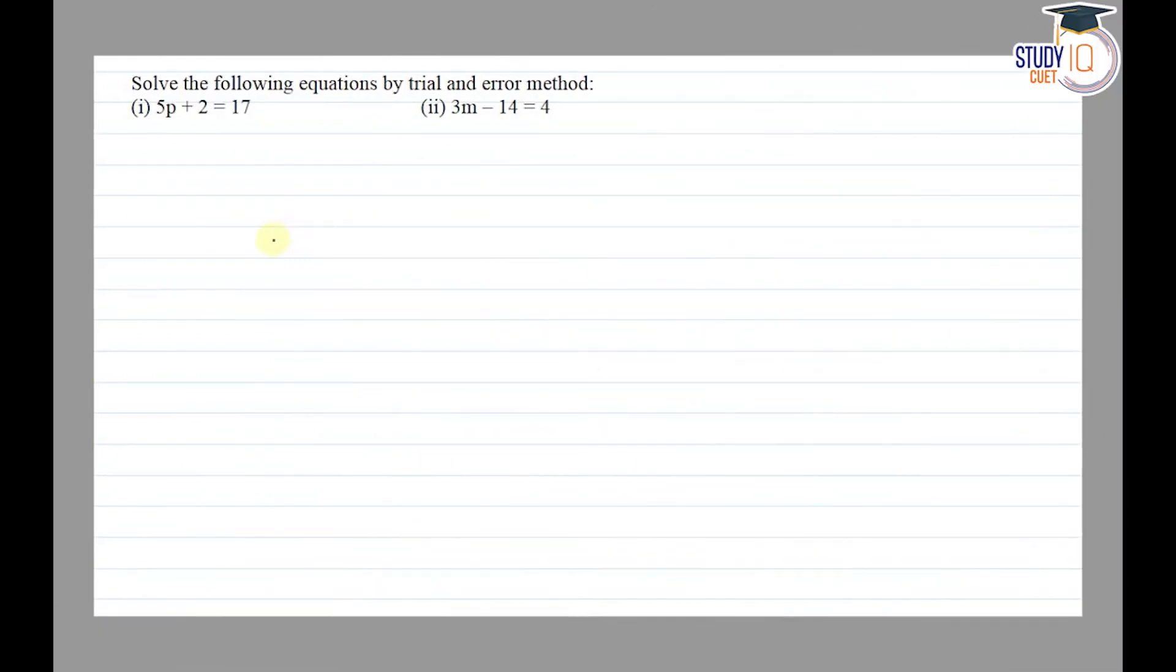Hello everyone, this question appears in Class 7th NCERT chapter on simple equations. This is the third question of exercise 4.1. The question says to solve the following equations by trial and error method. In the first question, 5p plus 2 equals 17.